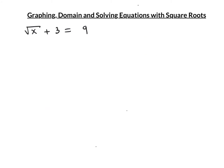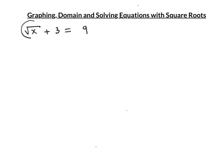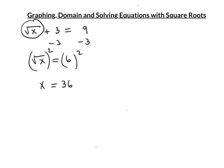The problem you run into when solving with square roots is that it's better if the square root is by itself. Take a look at this question. Notice what happens if I try to square both sides as it is right now — it becomes the square root of x plus 3 times the square root of x plus 3, which means you'd have to FOIL, and you would be no closer to finding the answer. What you need to do is get that square root by itself. Take 3 off each side. That means the square root of x equals 6. Now you can square both sides: the square and the square root cancel out, leaving x. And 6 squared is 36. The answer is 36.